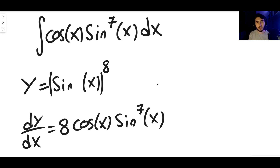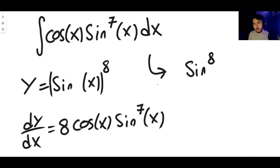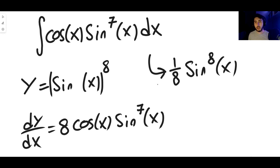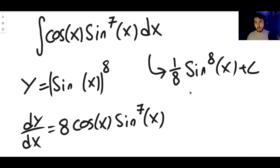We know the answer will be in the form sine to the 8 x times some constant. Since differentiating gives us 8 times what we want, we multiply by the reciprocal - one eighth - to cancel out that 8. So the answer to this integral is just 1/8 sine to the 8 x plus c. With all of these you can verify you've done it correctly by differentiating the integrated function with the chain rule and checking you get back to the integrand.